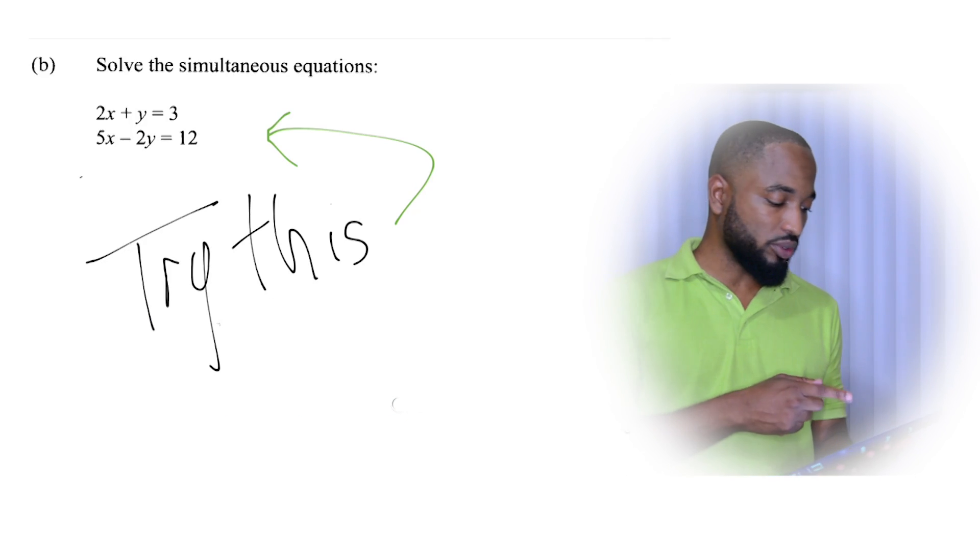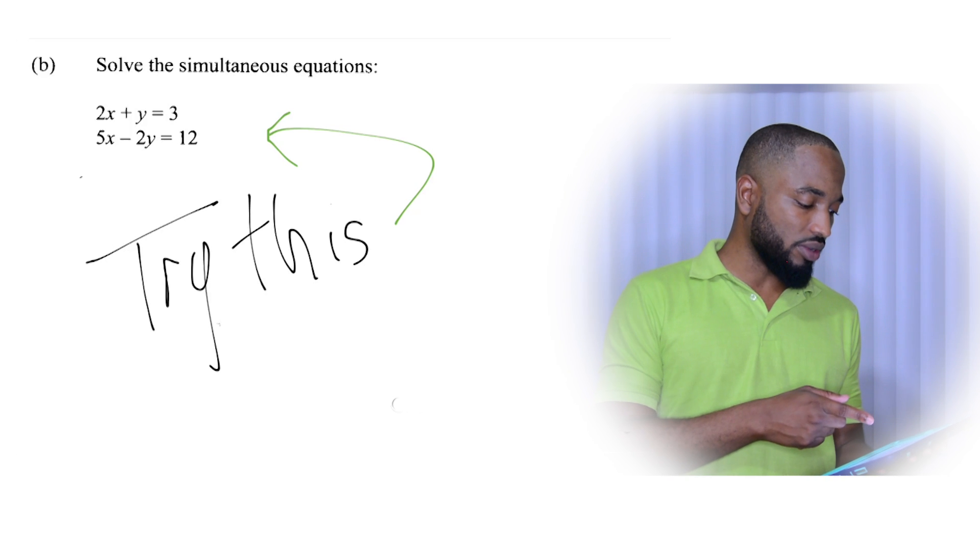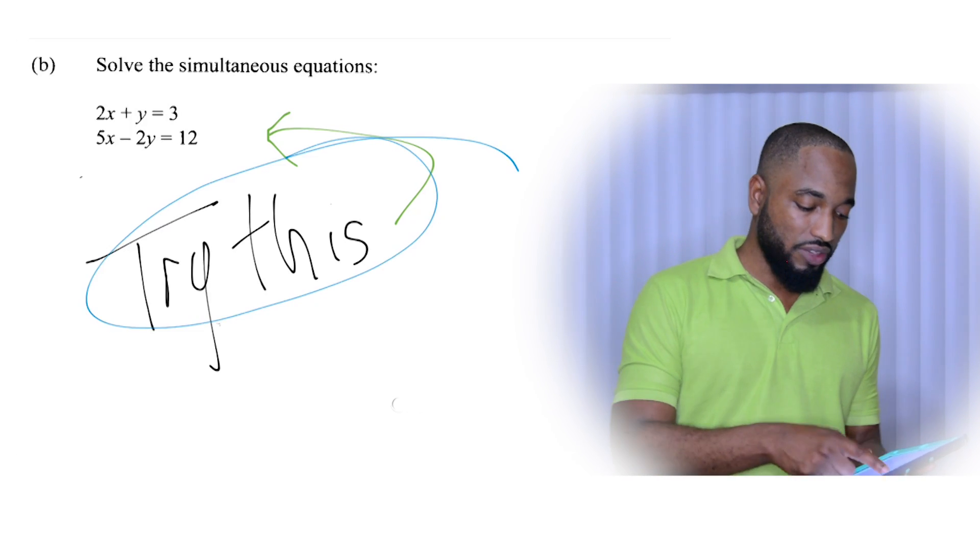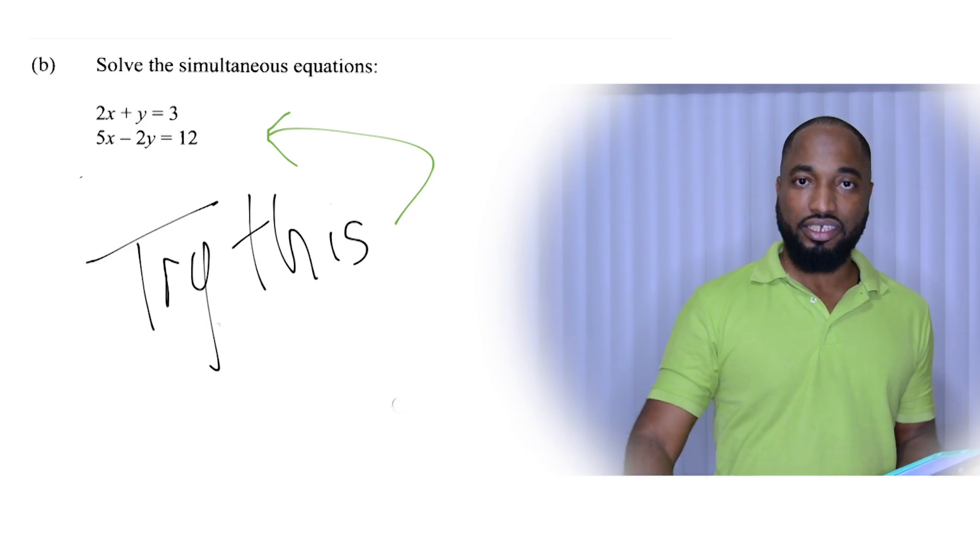All right, so before I go, here's an example. 2X plus Y equals 3. 5X minus 2Y equals 12. Try this out. See if you can get this. Leave your answer in the comments below.